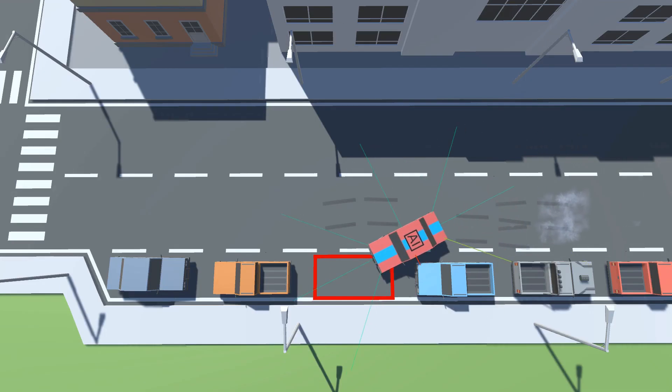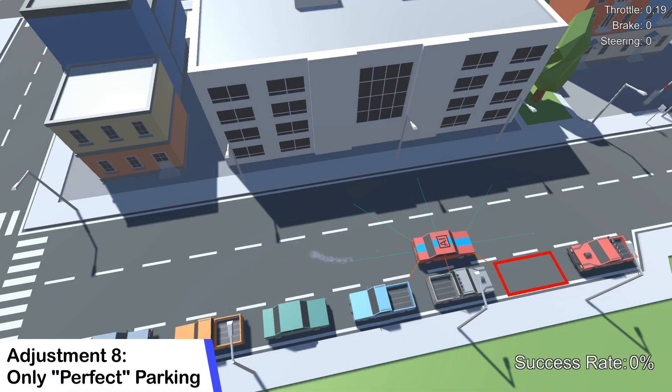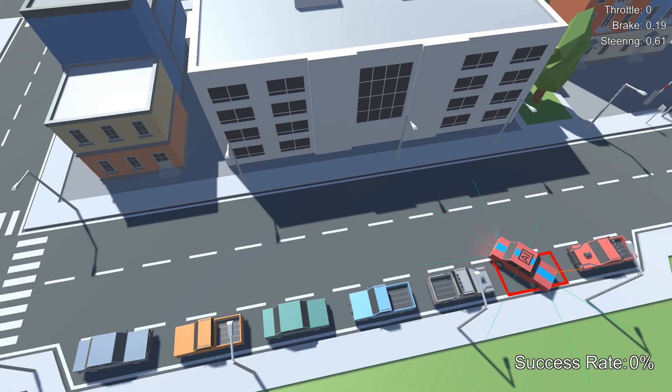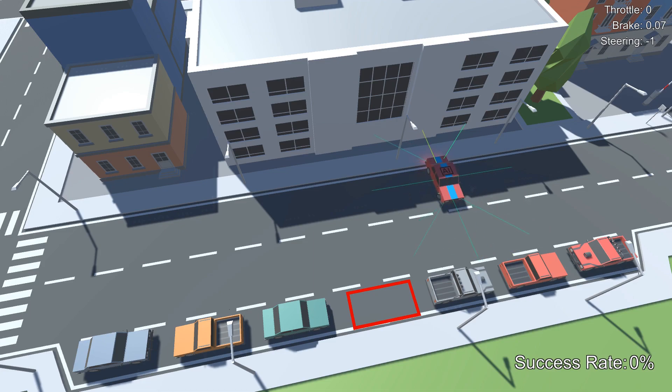Since I still wasn't quite happy with how imprecise the agent was, I wanted to try one final thing, which was making the final reward even more strict. With this setup the agent had to park almost perfectly in order to get any reward for stopping at the parking space. And this is the rather disappointing result of that. This setup was simply too hard for the agent to learn anything. All it learned was that it's good to get closer to the parking spot, but not really how to adjust itself.